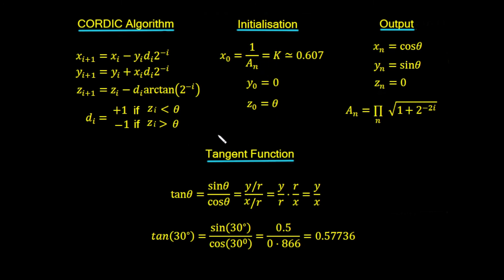There is one other thing we can do: work out the tangent function, simply by dividing sine by cosine. The tan of theta is given by sine theta upon cos theta. We know sine theta is y upon r, and cosine theta is x upon r. When we divide them, we get y over r times r over x — the r's cancel, giving y upon x, which is just tan theta. So for our example, tan of 30 degrees equals sine 30 over cosine 30, which is 0.5 divided by 0.866, equal to 0.57736.